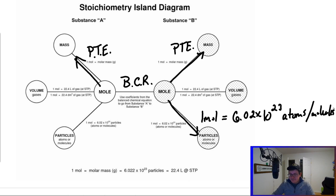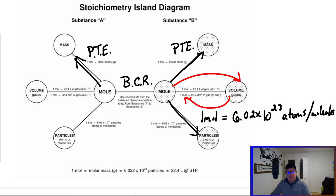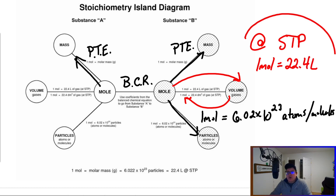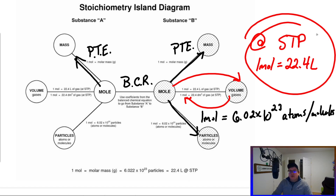There is one brand new thing here, which we kind of talked about in our last notes. Going back and forth from moles to liters of a gas, or vice versa: at STP, one mole of an ideal gas is 22.4 liters. That's only at standard temperature and pressure.